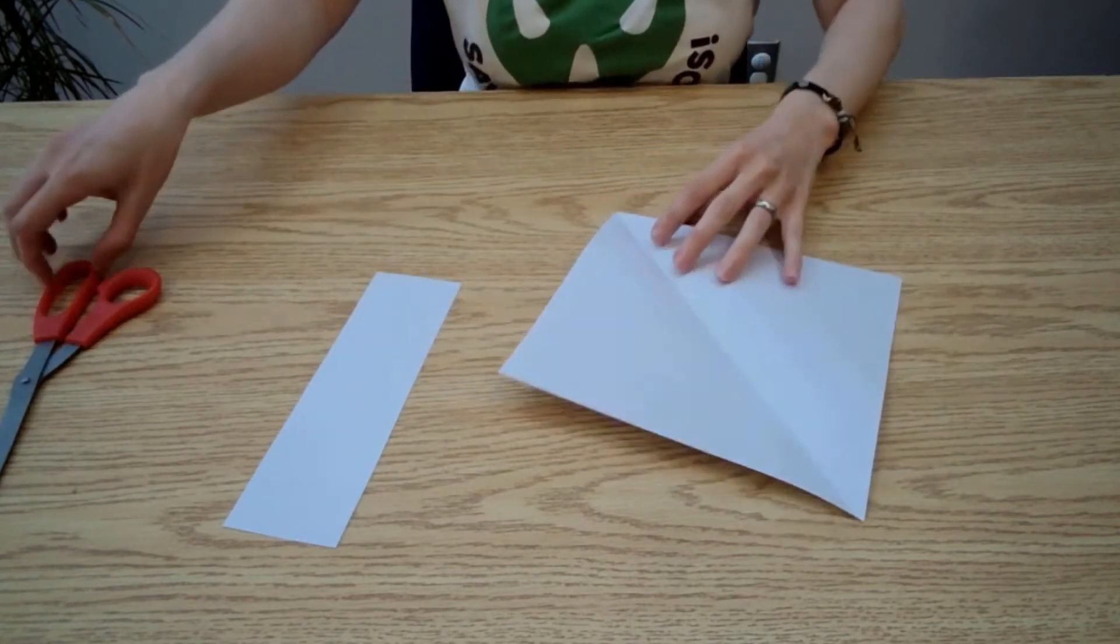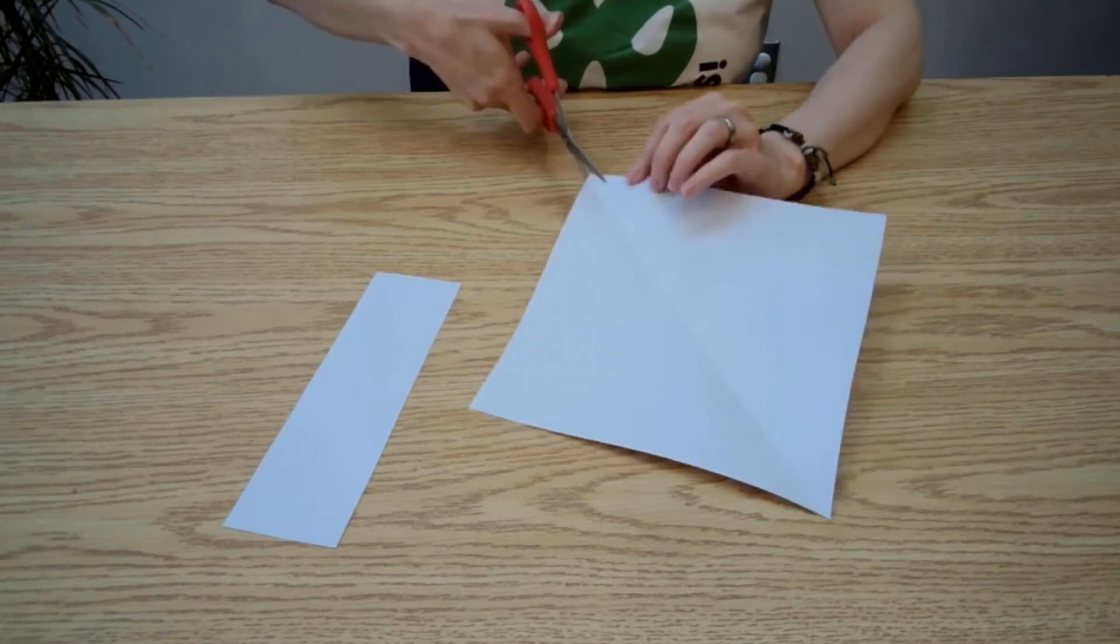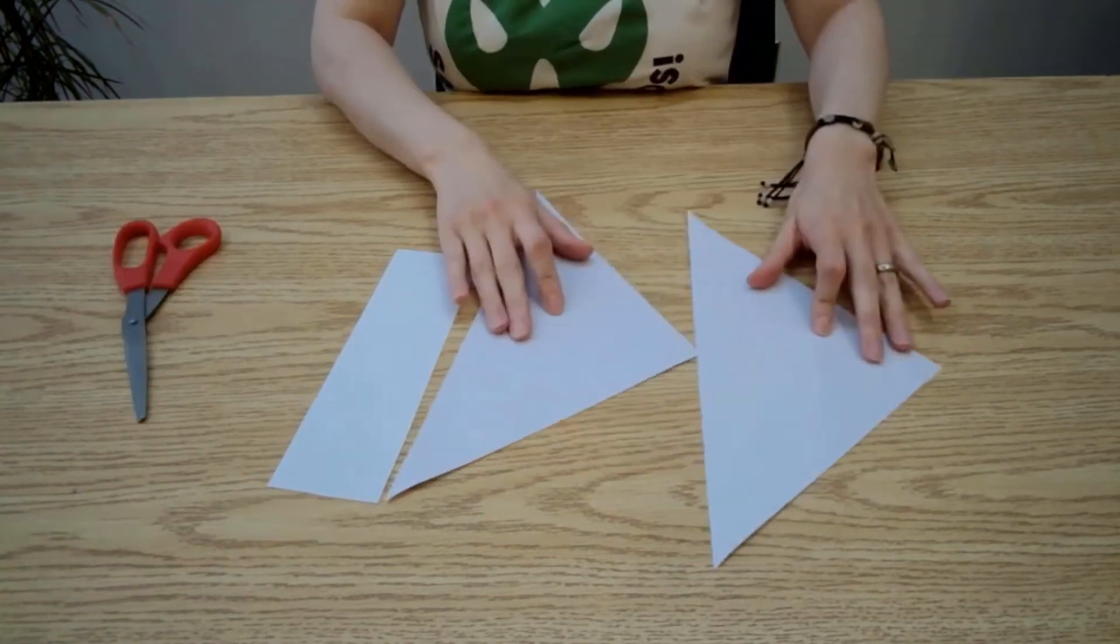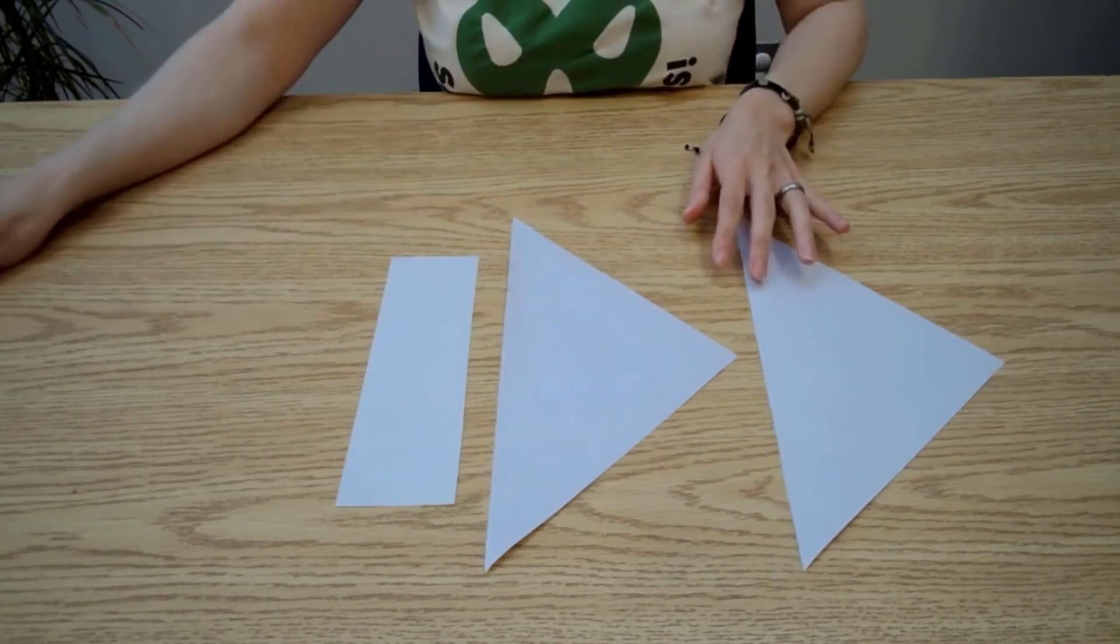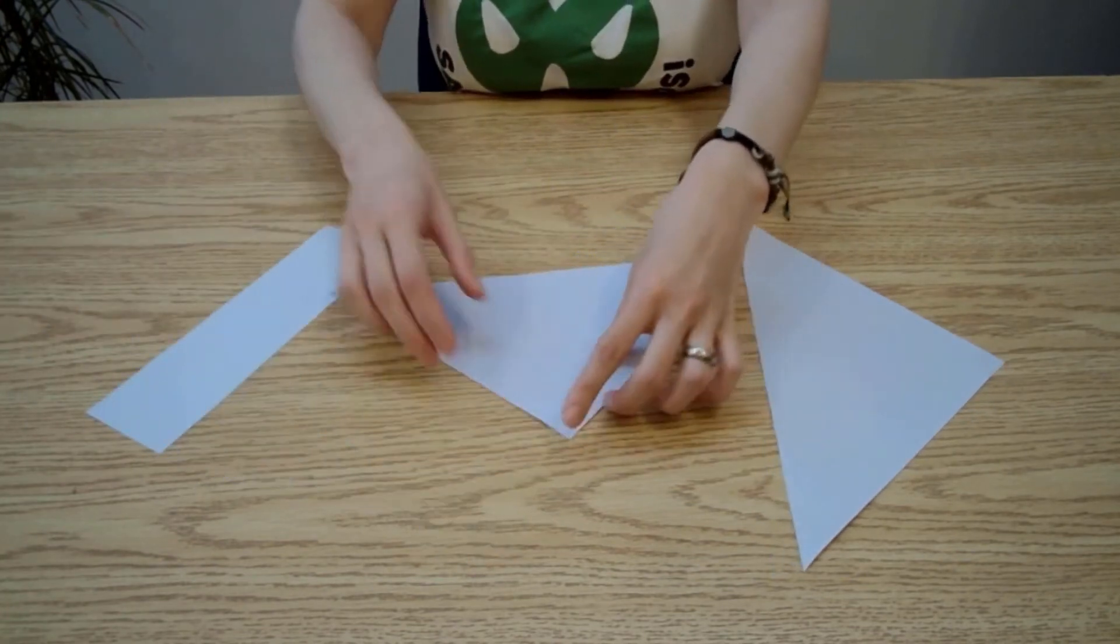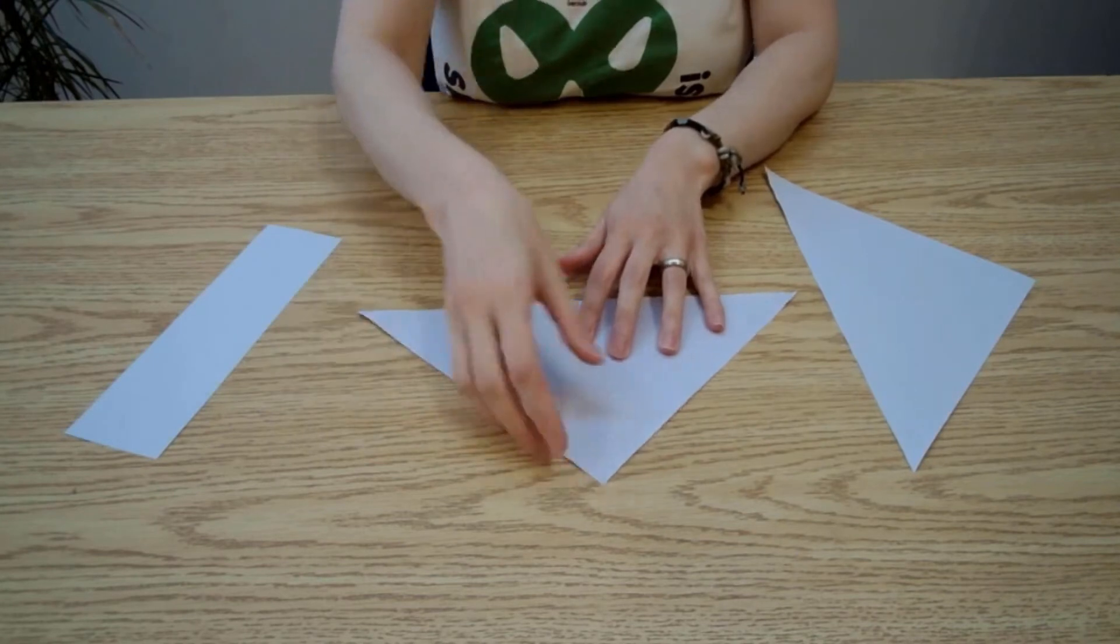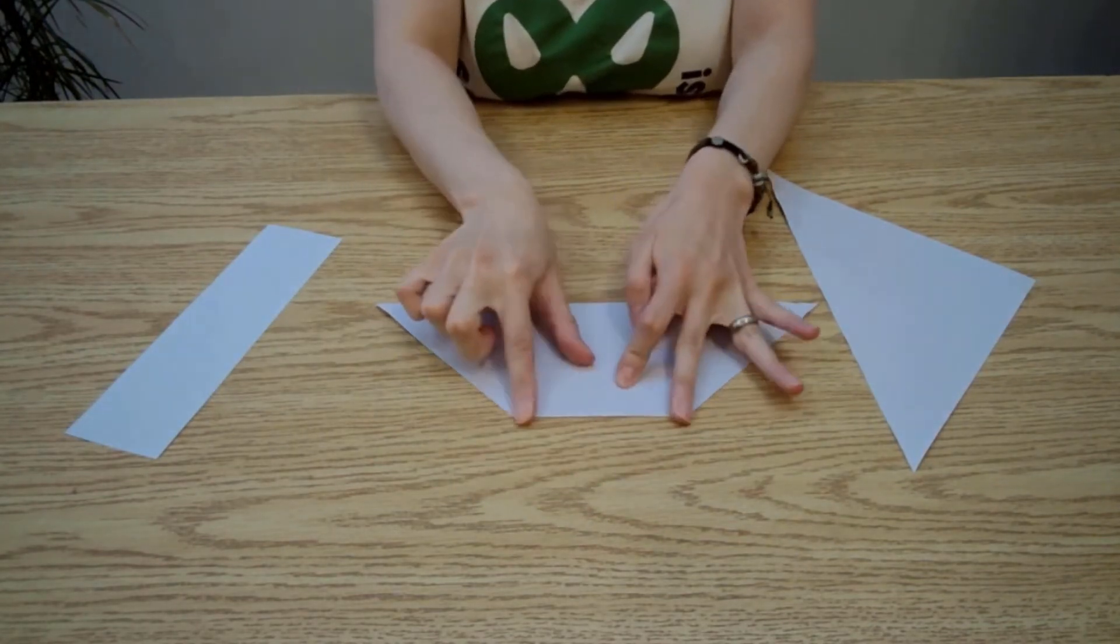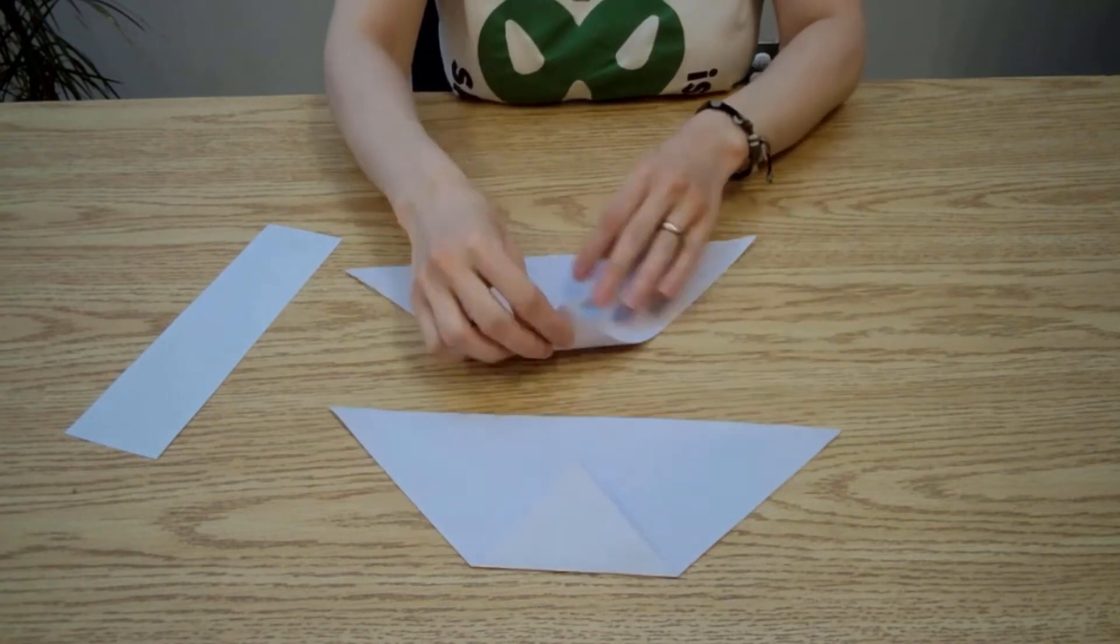Next unfold the paper and cut along the folded line to make two triangle pieces. Now take your triangle pieces and fold down the tops of both triangles. They don't have to reach the bottom but try to make them as close to the same as possible.